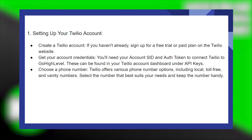First, create a Twilio account. If you haven't already, sign up for a free trial or paid plan on the Twilio website. You will need your account SID and authentication token to connect Twilio to GoHighLevel. These can be found in your Twilio account dashboard under API keys.